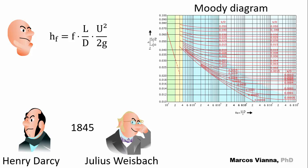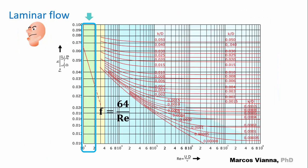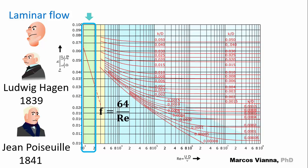Now, we just have to find the appropriate value for f. The problem has already been solved for laminar flow. Mr. Ludwig Hagen and Mr. Jean Poiseuille had the perfect formula: f equals 64 over Reynolds.